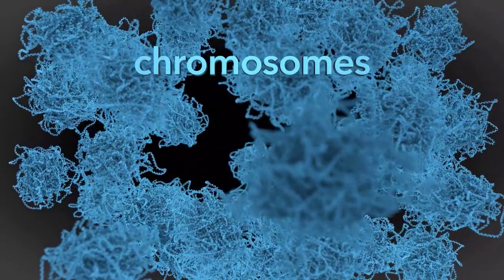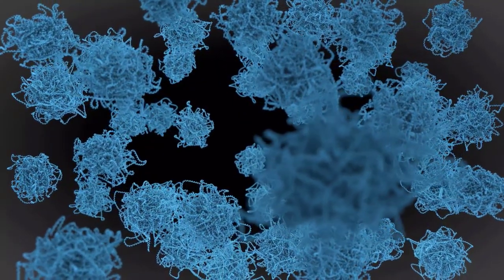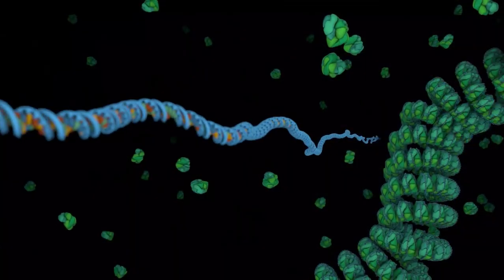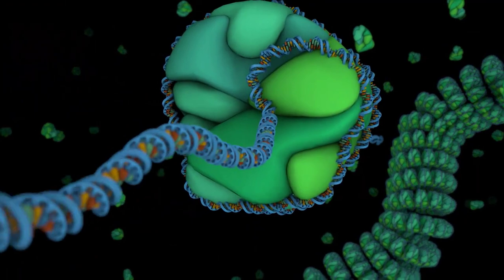Humans have 46. They keep DNA organized, untangled, and accessible. Each chromosome is a single DNA molecule with attached proteins called histones.